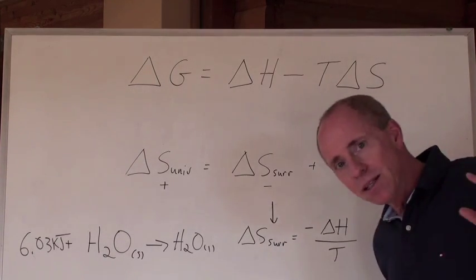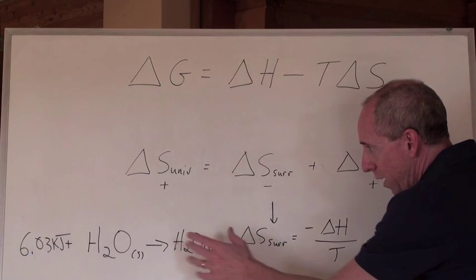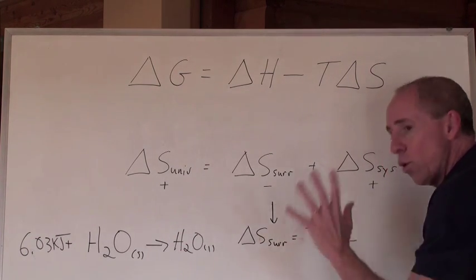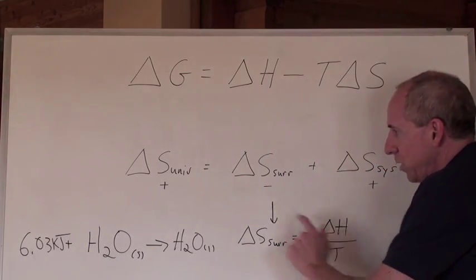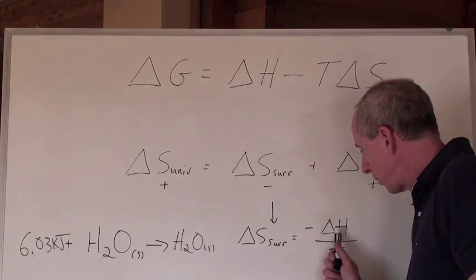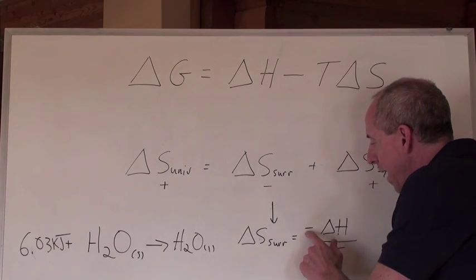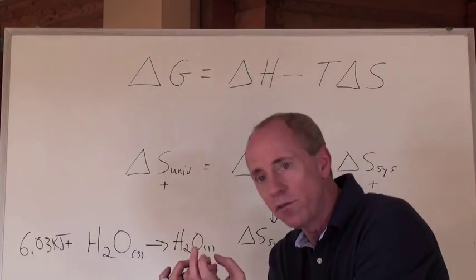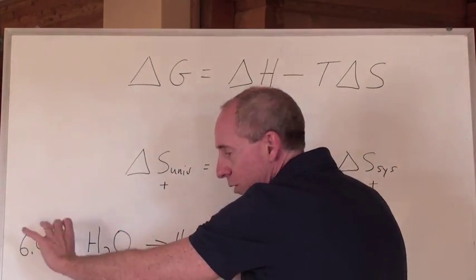The delta S for this surroundings right here is going to be equal to this number where we plug in these numbers here. The delta H for this reaction is 6.03 kilojoules. It's positive because it's endothermic. We put a negative in front. That means energy is being sucked away from the environment around this equation.